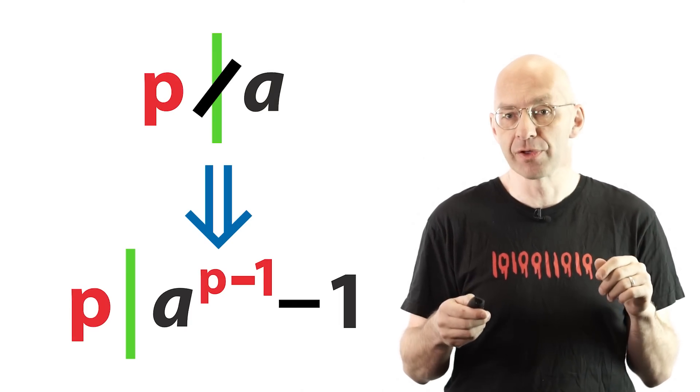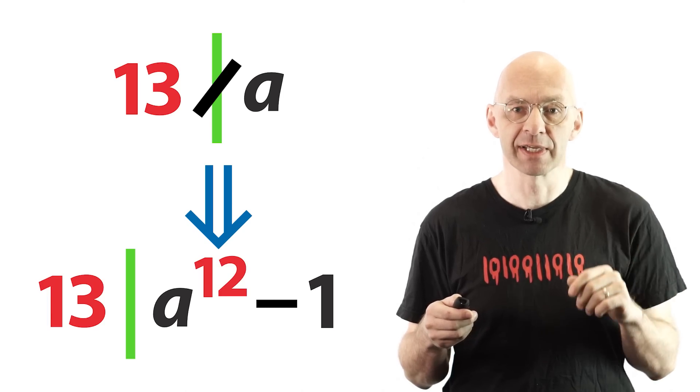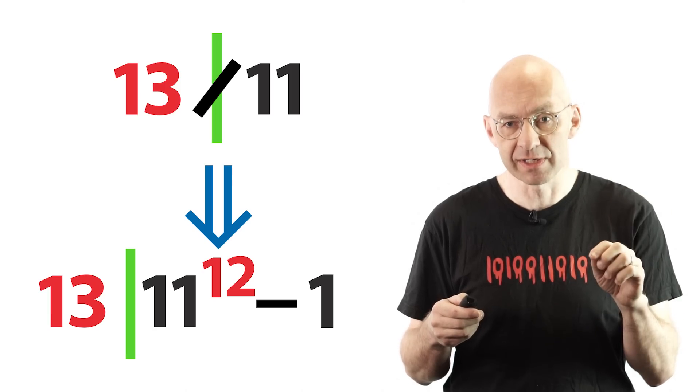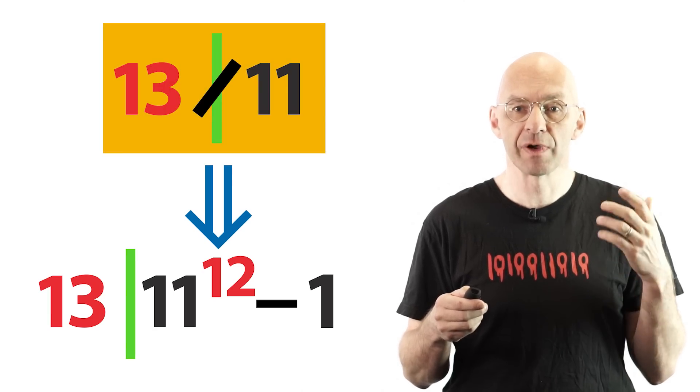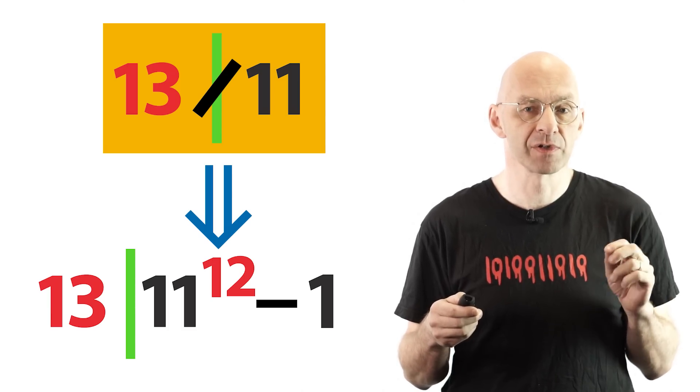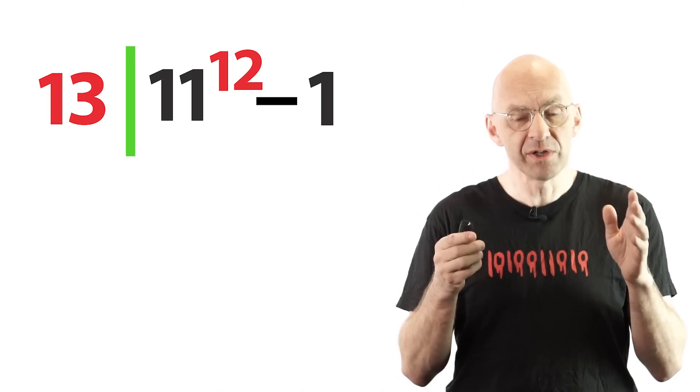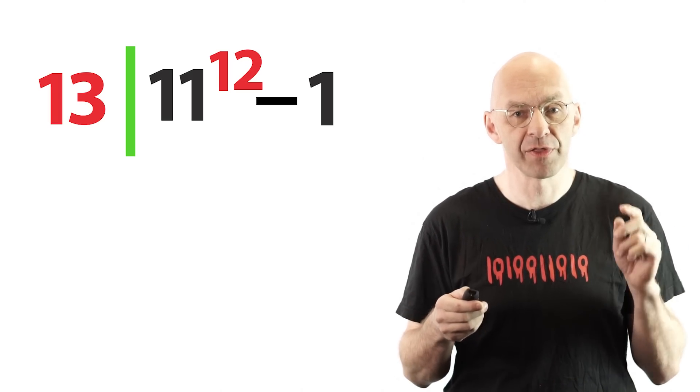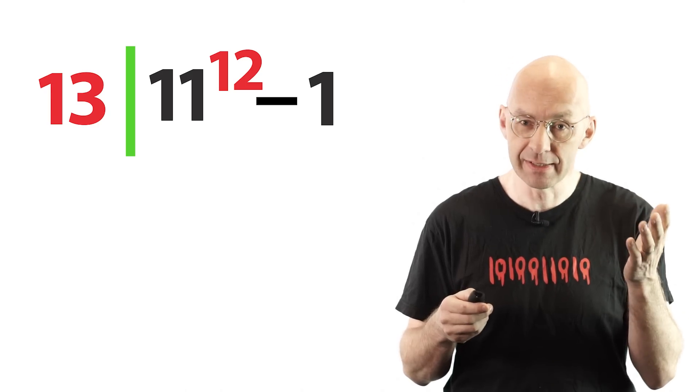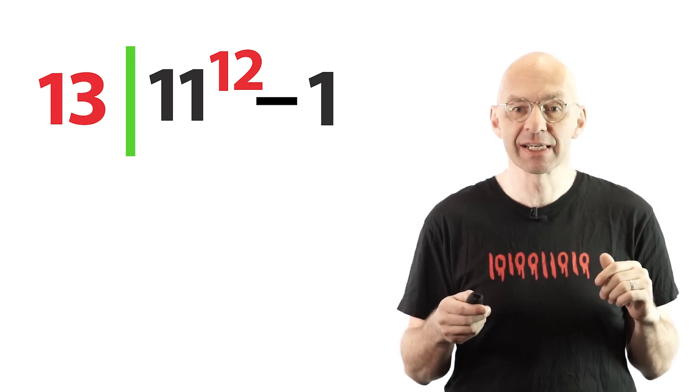Okay, now to our unlucky prime 13 and the base 11 of our monster integer. Of course 13 does not divide 11 and so Fermat little theorem promises us that 13 divides 11 to the power of 12 minus 1. In other words, when you divide 11 to the power of 12 by 13 you get a remainder of what? Well, 1 of course. In maths lingo we write that succinctly like this.